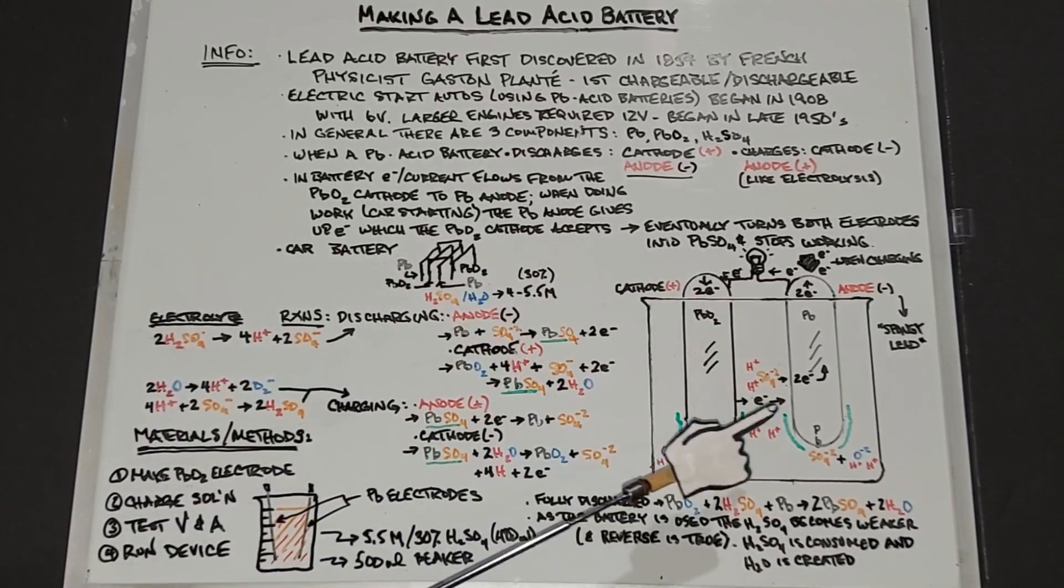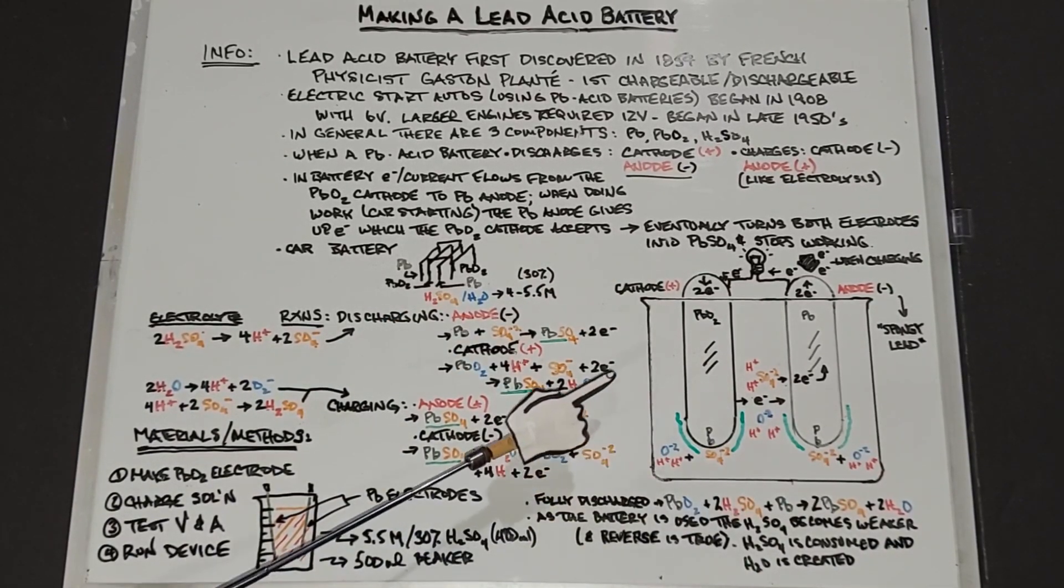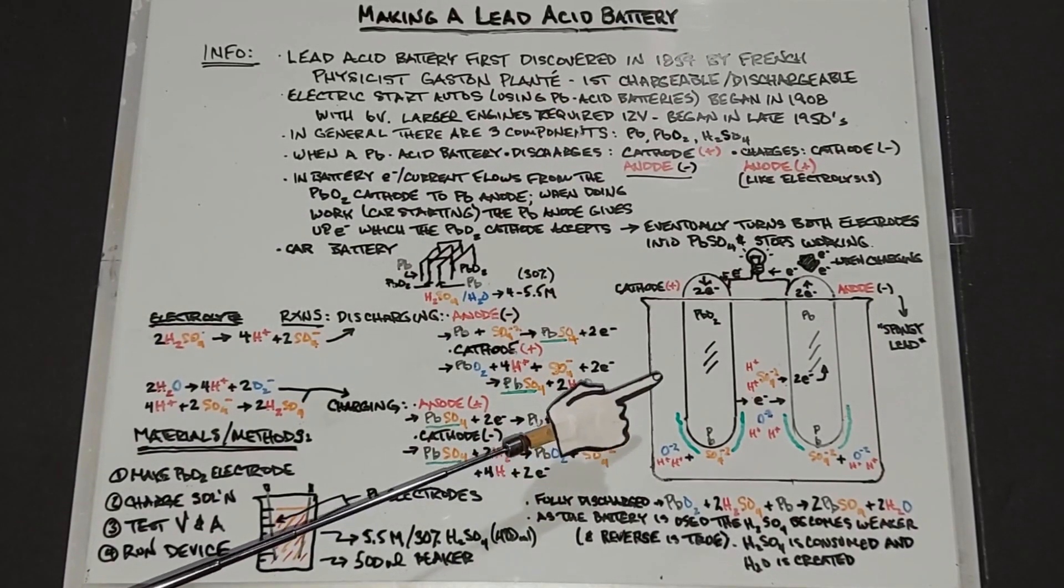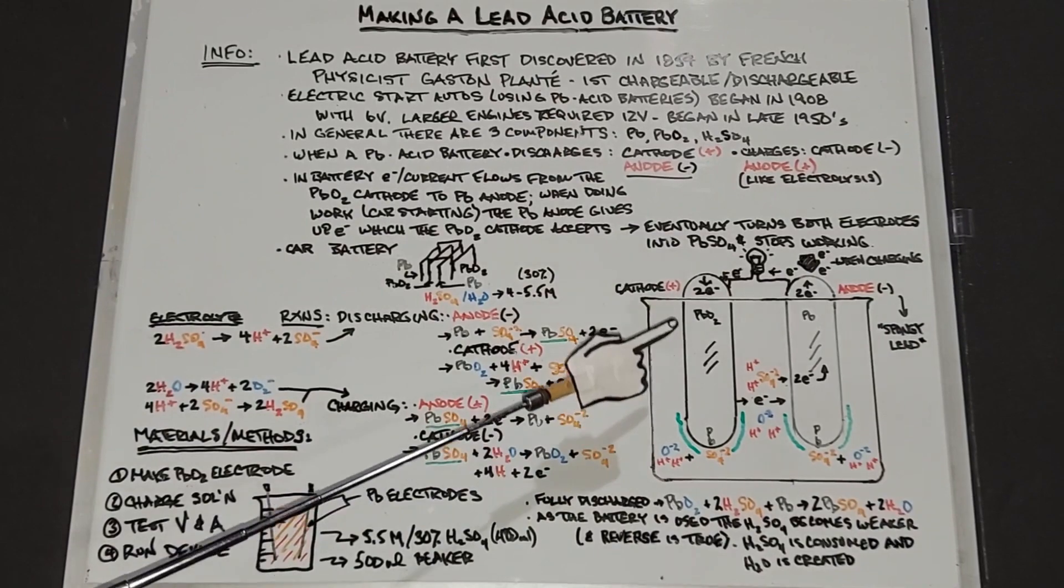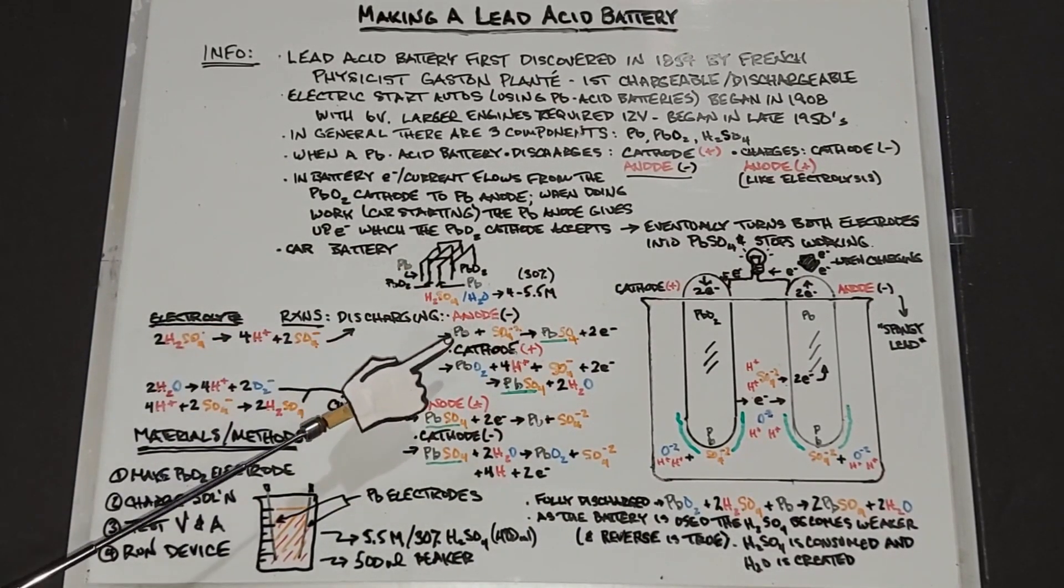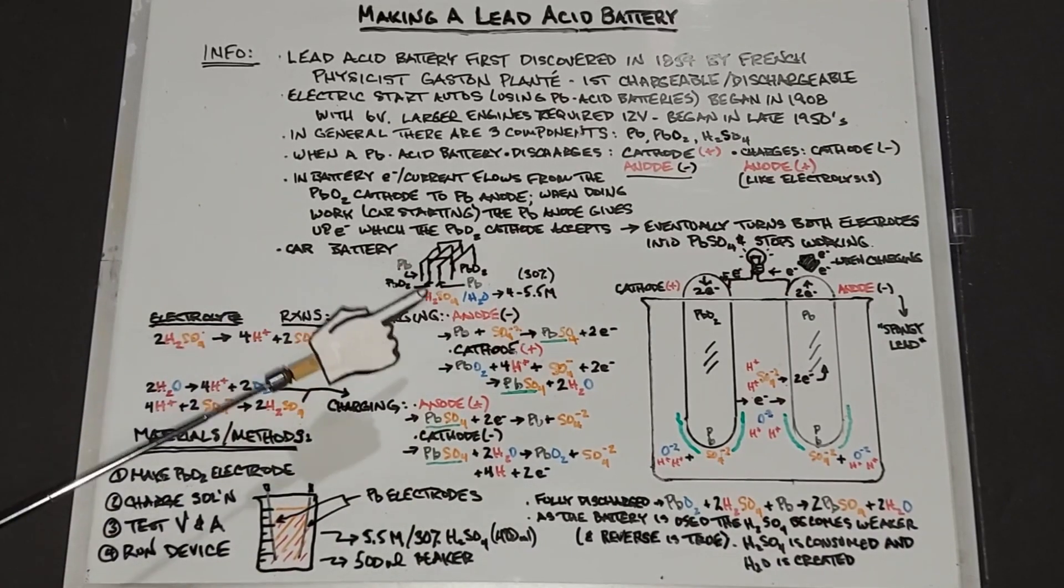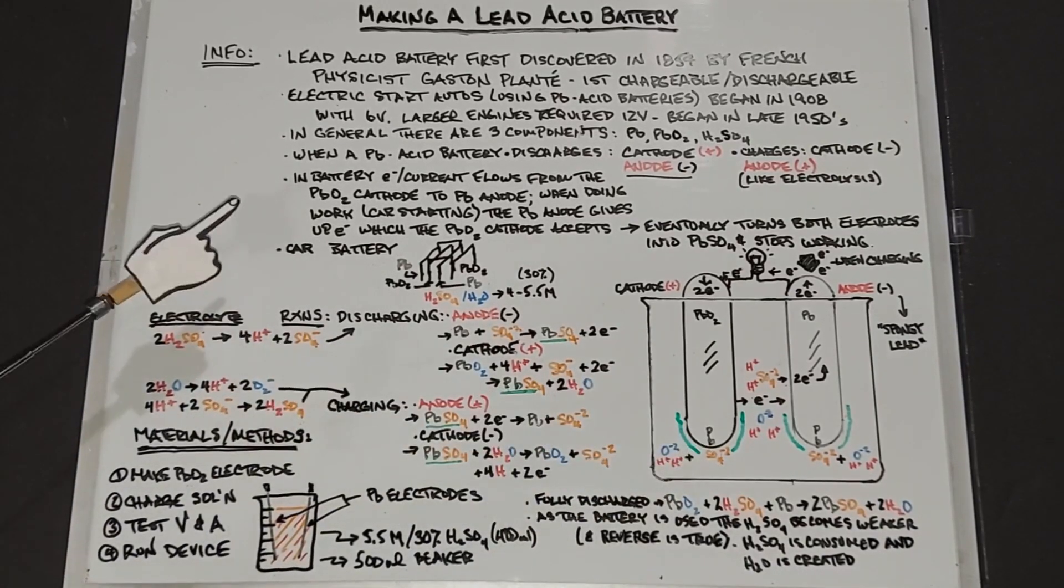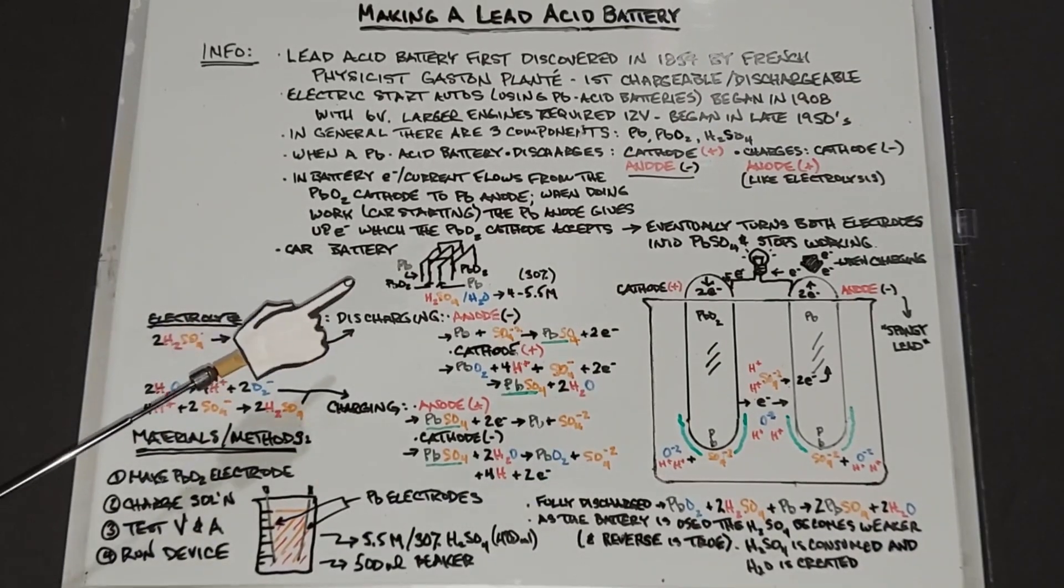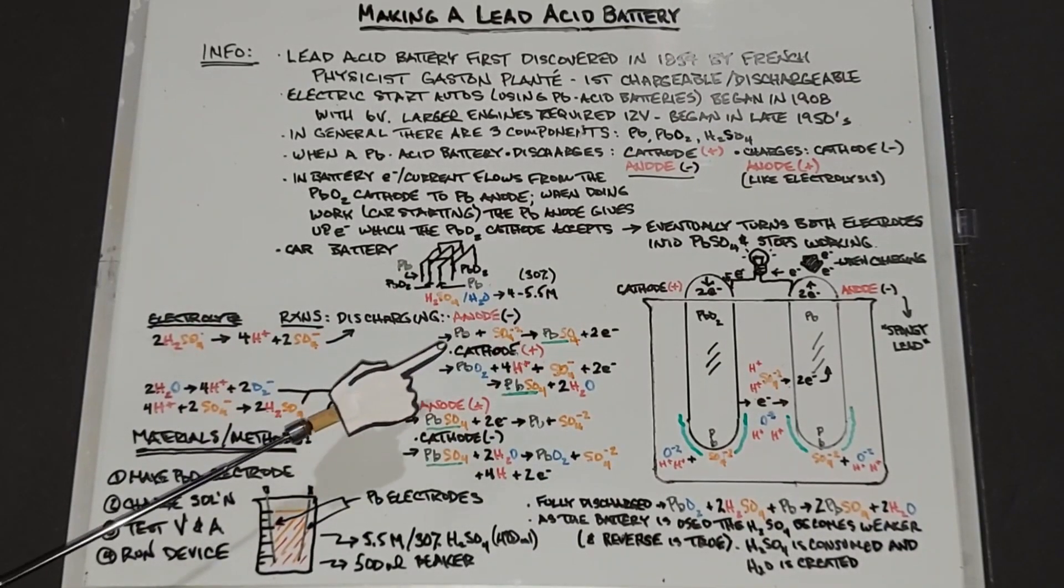To me it's pretty amazing that this battery was first made in 1859 and we're still using it today. Both lead, lead dioxide, and sulfuric acid are very abundant, and so these lead acid batteries have come through for decades, over 100 years now. It's pretty amazing to see how these reactions work and how long this battery has lasted.